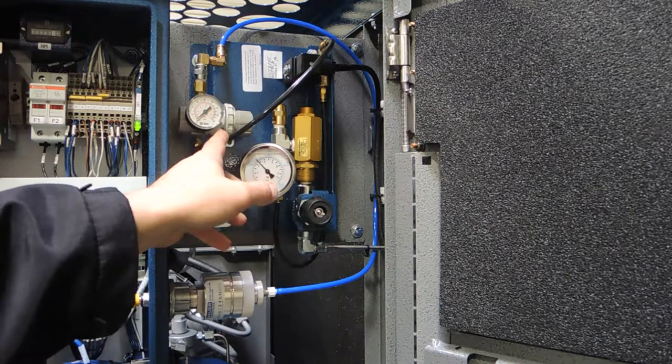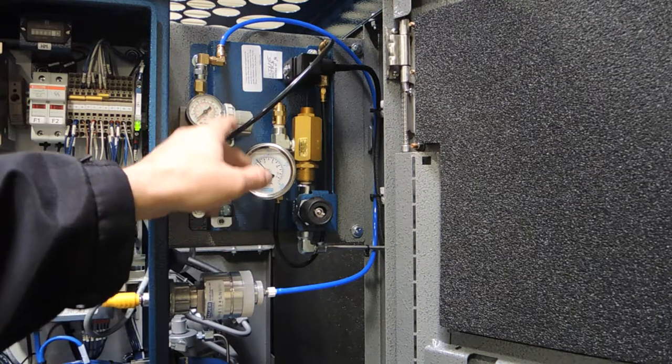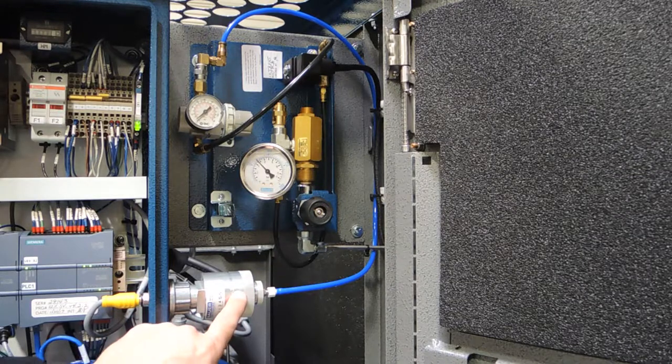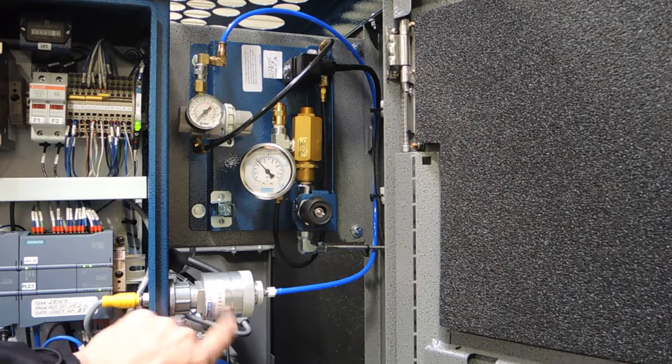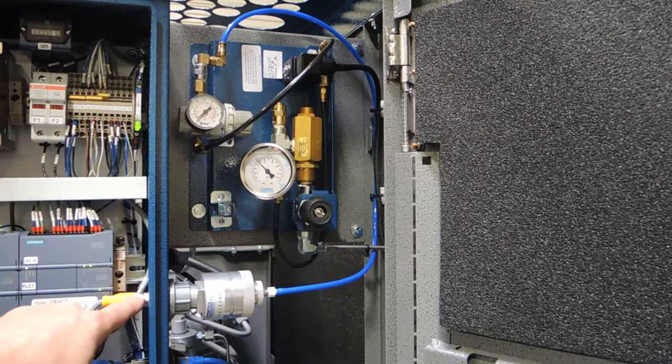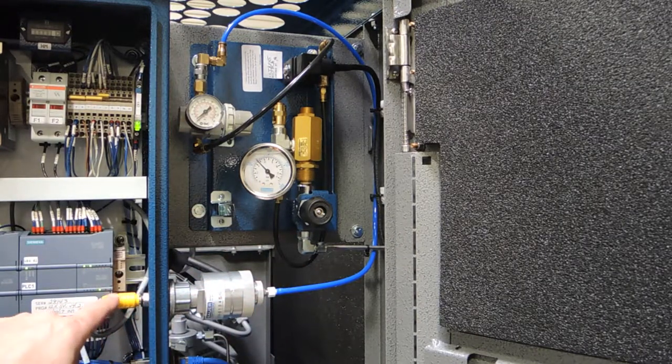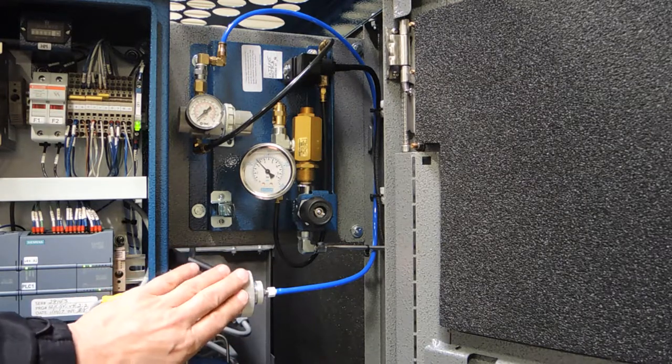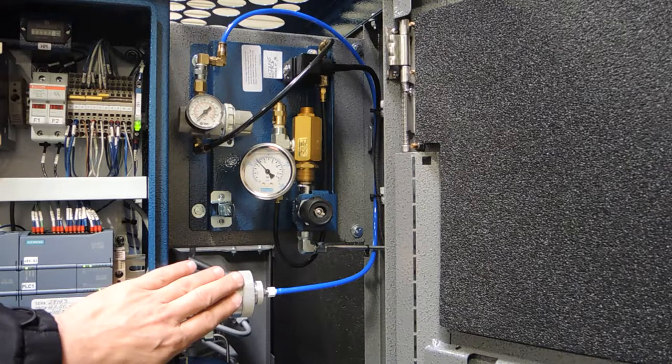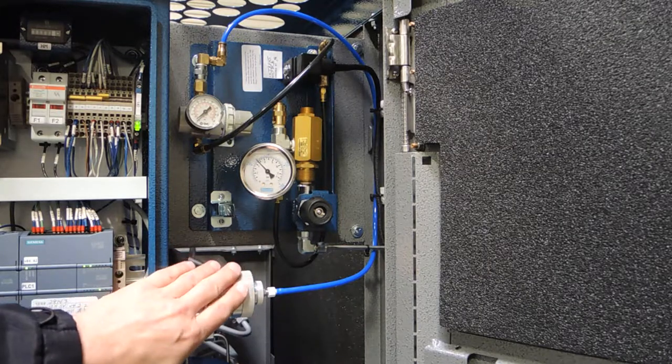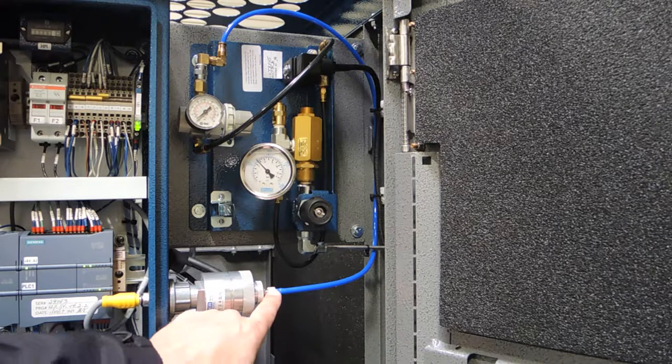That will supply low pressure air through another regulator here, which steps it down into the CO cell. This is actually where the cell is, inside this manifold. This is our sampling gas here. Then it's connected to the PLC through this bulkhead connection here. I'm not going to cover how to change out the cells in this video. We'll leave that for a later video.